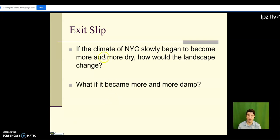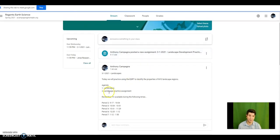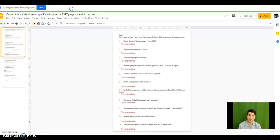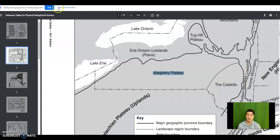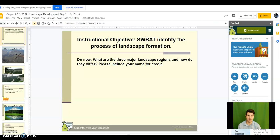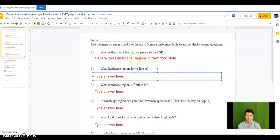Okay we're actually gonna hold off on the exit slip for now, we'll come back to that later. I do want to bring your attention to Google Classroom. So today we talked about landscapes, we have a landscape practice assignment. So if we zoom in a bit, so this assignment is due on Wednesday. I'm gonna start you off with the first four. You're gonna use the maps on page two and three of your Earth Science Reference Table to answer the following questions. So the first one's real simple: what is the title on page two of your reference table? So let's pull up ESRT page two.